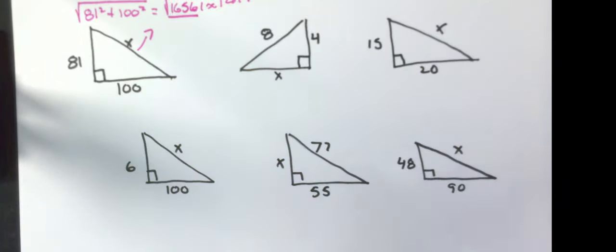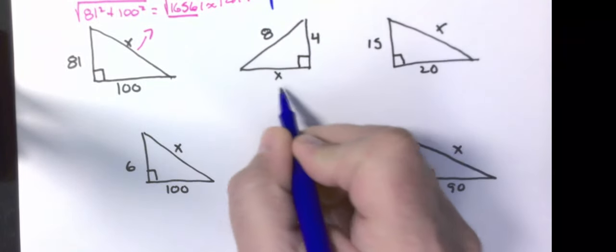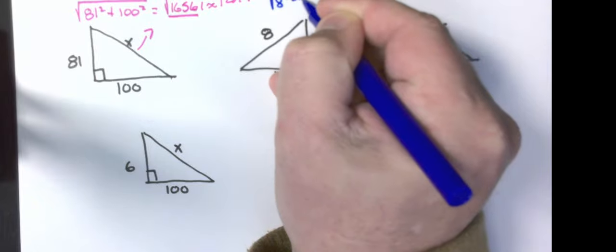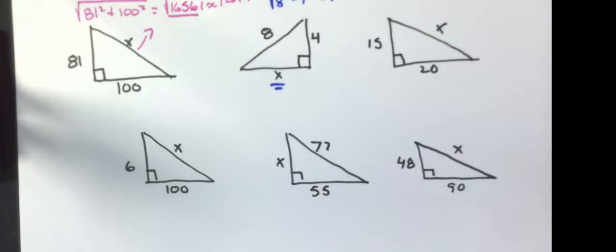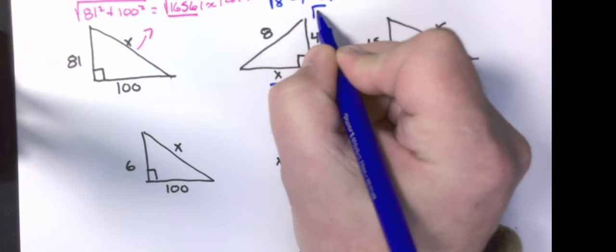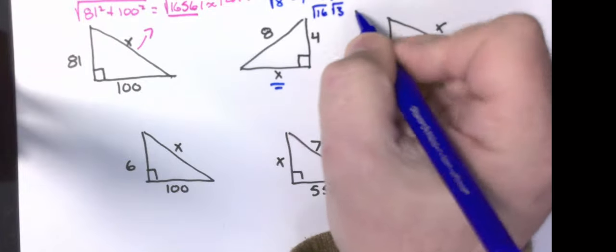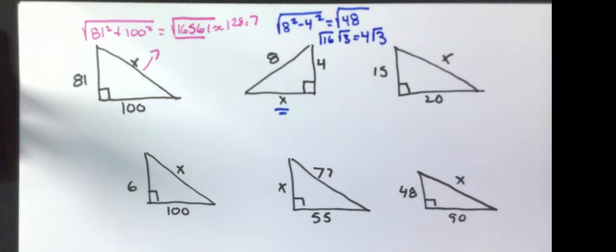For the second one, we're trying to find a leg, so we're going to be doing a subtraction problem. We're going to be doing the square root of 8 squared minus 4 squared. At least do this part before you try to do any work. 8 squared minus 4 squared is the square root of 48. While the square root of 48, I know, is the square root of 16 times the square root of 3. My exact answer would be 4 root 3. Or if they let you do a decimal approximation, the square root of 48 is approximately 6.9.